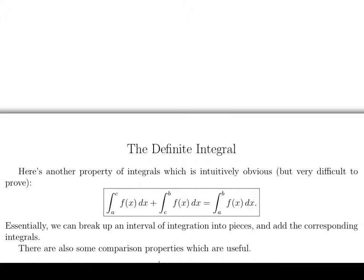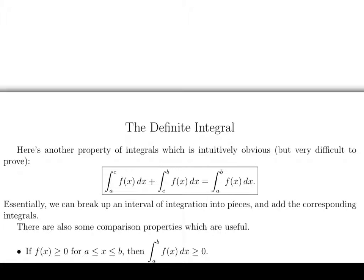We have a few comparison properties which are useful. If f(x) is greater than or equal to 0 on the interval from A to B, then the integral from A to B of f(x) is greater than or equal to 0. This makes sense from the point of view that when f(x) is greater than or equal to 0, the integral represents an area, and an area is never negative.